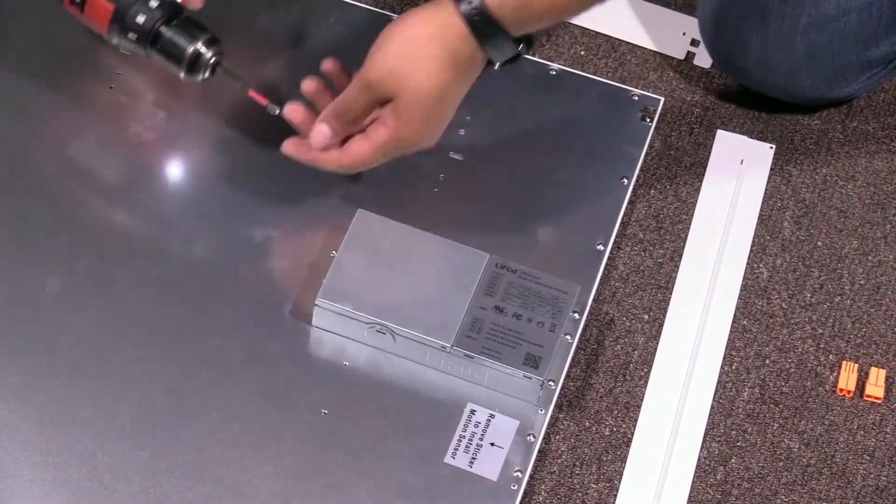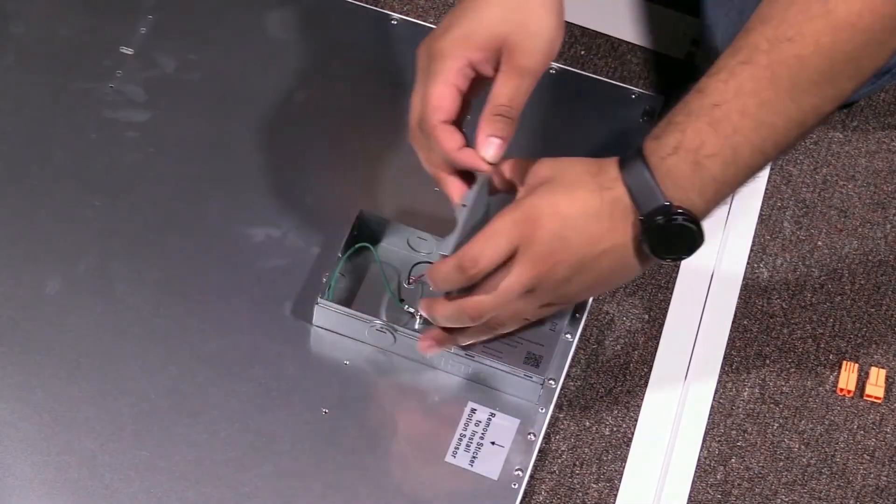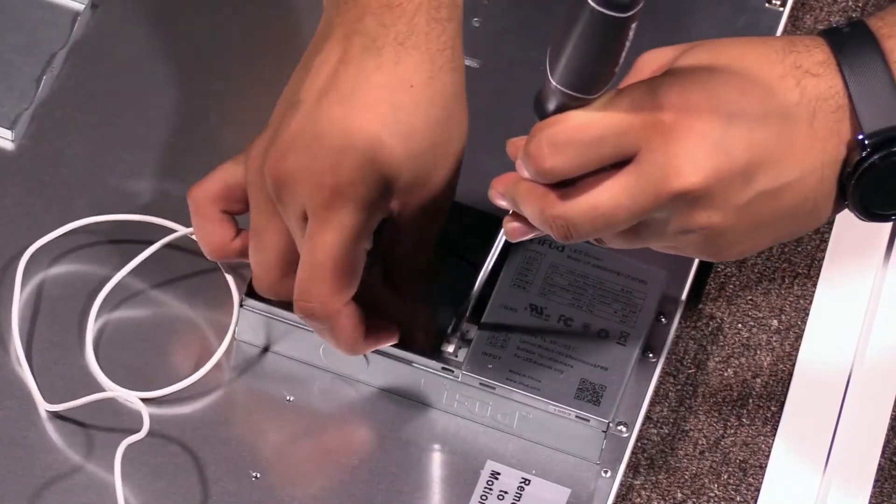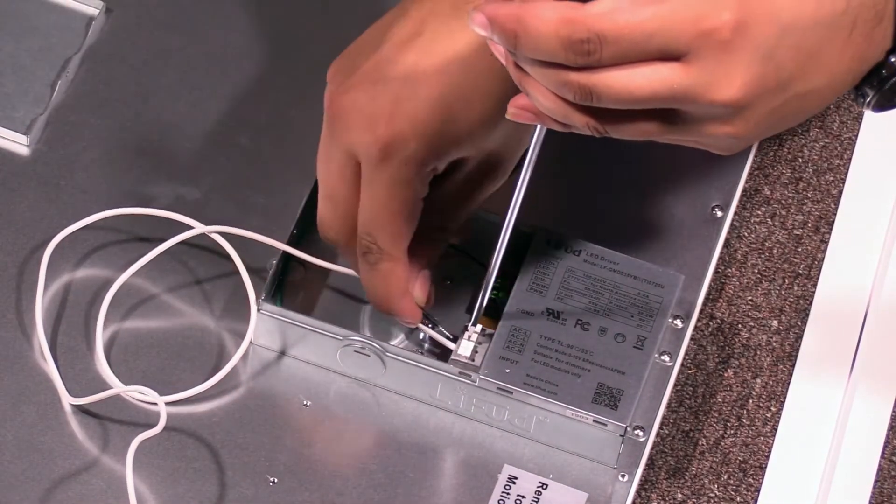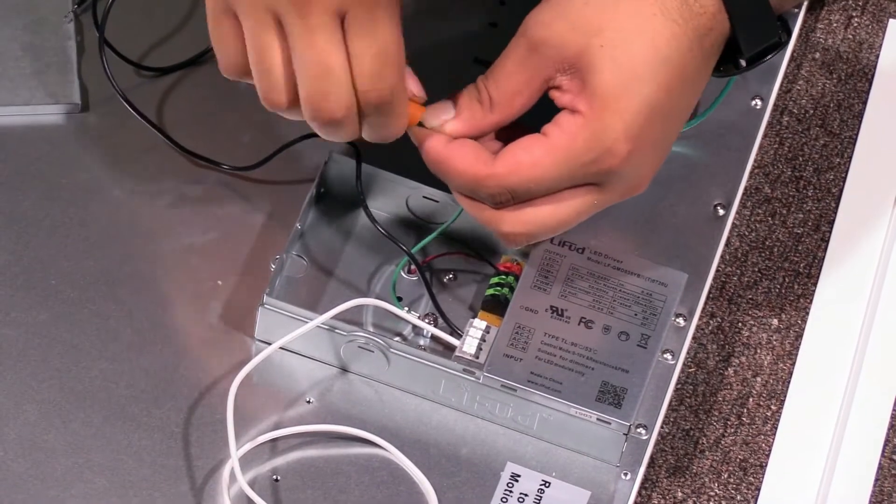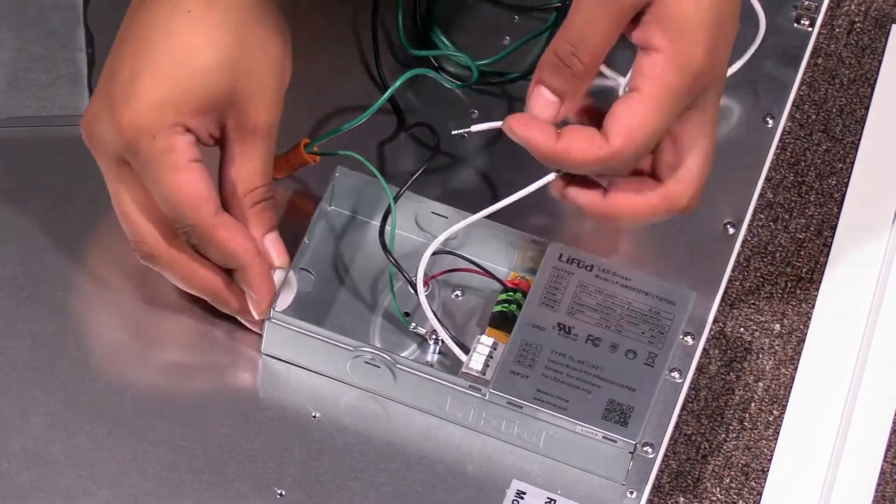We can now prepare the retrofit fixture for wiring. Open the J-Box, connect the included wire leads, and run them through the knockout. Be sure to place the wire protection grommet into the knockout to avoid damaging the wires.